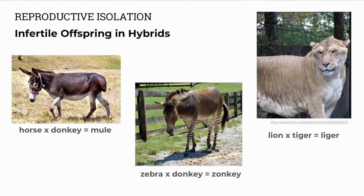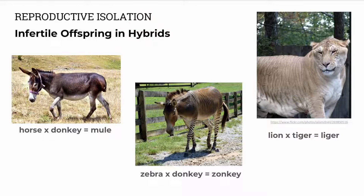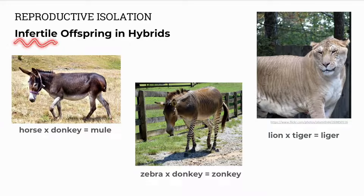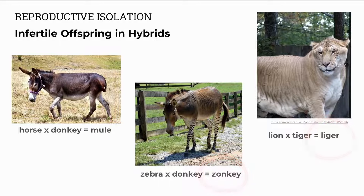Some species are able to mate and produce offspring — we call these offspring hybrids. For example, a horse can mate with a donkey and produce a mule, but it's infertile. Another infertile hybrid is a zonkey or a liger — those are the examples.